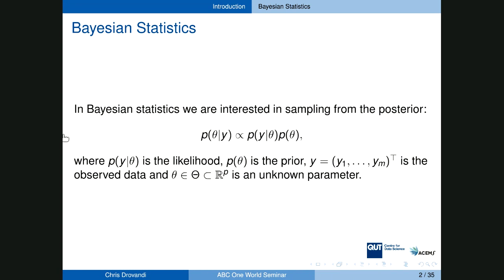First, I'll give a bit of background to fix the notation. In Bayesian statistics we're interested in sampling from the posterior distribution, where theta is the parameter of interest and y is the data we've collected. The posterior is proportional to the likelihood function — implied when we choose a statistical model — multiplied by the prior distribution on the parameters, which encodes information about the parameter before we collect the data. We combine prior and likelihood to obtain the posterior.